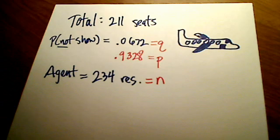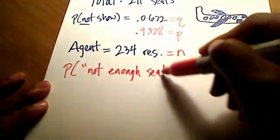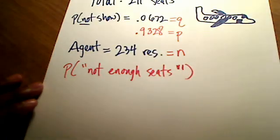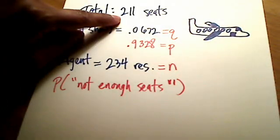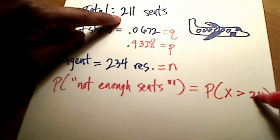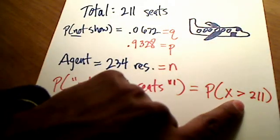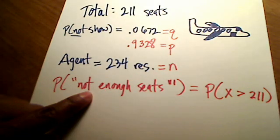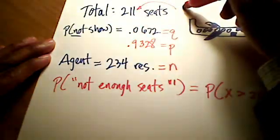What they're asking us to find is the probability that we do not have enough seats. If this airplane can hold 211 seats, what they're really asking for is the probability that x is greater than 211. If 211 people show up, we're good. But if more than 211 people show up, we're not going to have enough seats. So I'm looking for P(x > 211), where 211 is really just an x value.